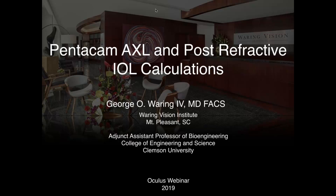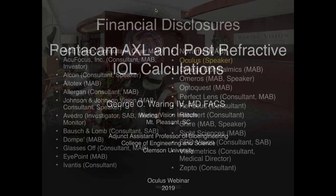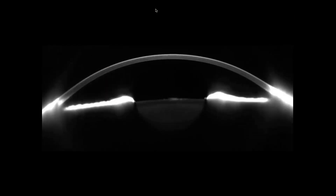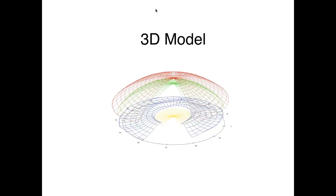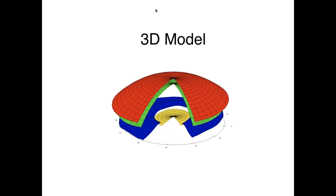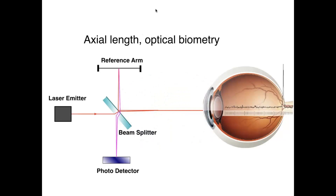This is a Scheimpflug tomography of the anterior segment with the Pentacam AXL. What you've just noticed in this motion is essentially a rotation of the tomographer that allows for a 3D reconstruction of the anterior segment. This is done with high fidelity in a high-resolution fashion, and we can take advantage of this to remodel and plan our treatments accordingly in circumstances such as the post-refractive IOL calculation.